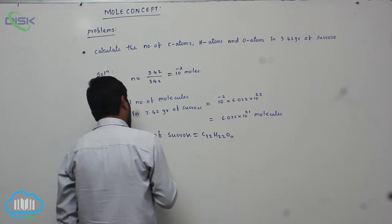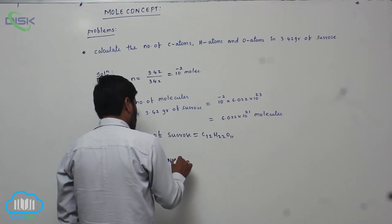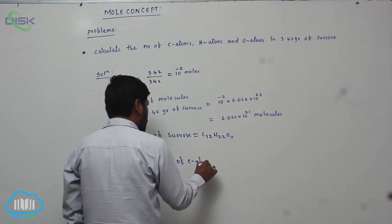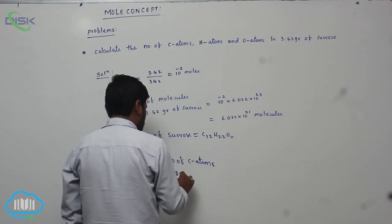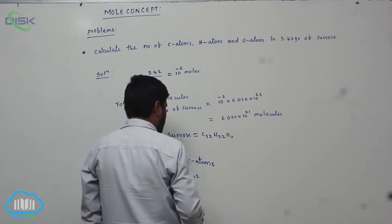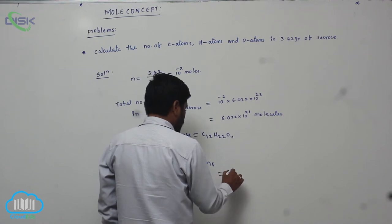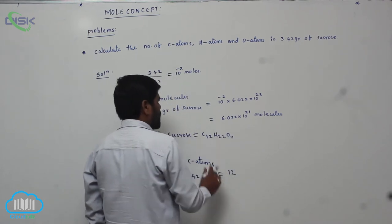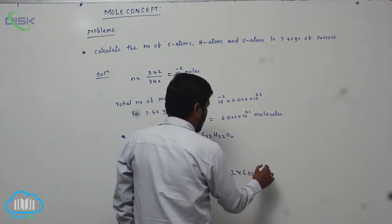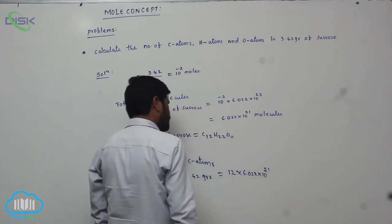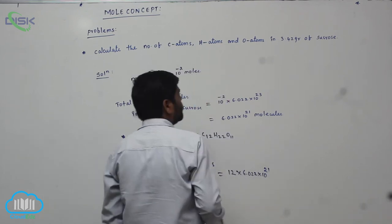Therefore, the number of carbon atoms in 3.42 grams equals 12 into 6.022 into 10 power 21.